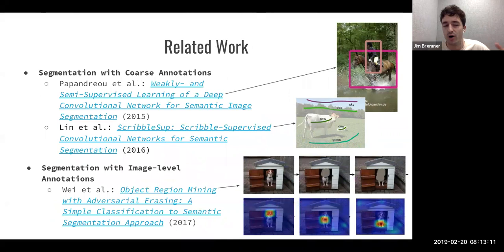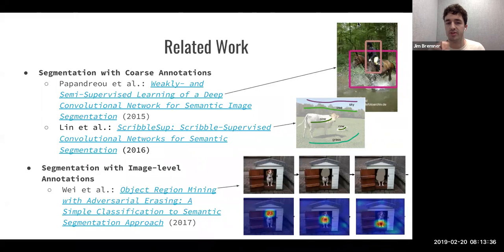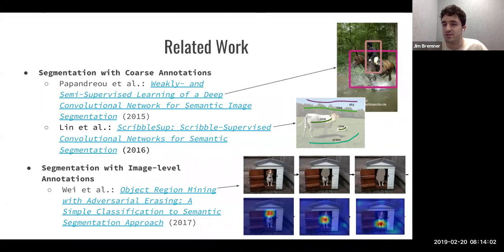There are two broad categories of related work. The first involves coarse annotations — a similar idea in that you're using object cues to help a segmentation network learn, but with different annotation types such as bounding boxes or scribbles shown in the slides. These work quite well, but the main issue is that they're really expensive to obtain and take a lot of time. It would be great to use just image-level annotations because there's loads of data for that.